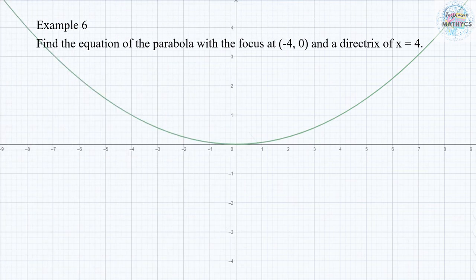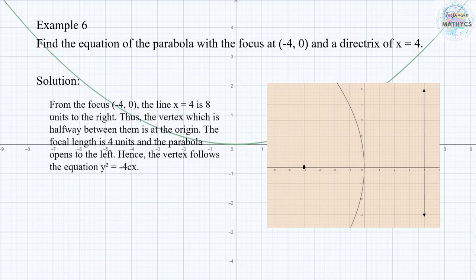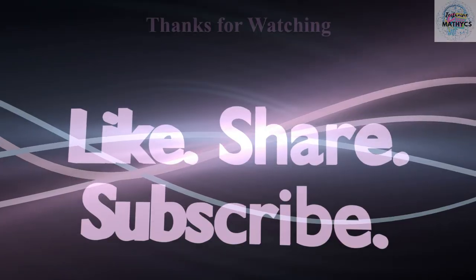Number 6: find the equation of the parabola with the focus at (negative 4, 0) and the directrix of x equals 4. From the focus at (negative 4, 0), the line x equals 4 is 8 units to the right. Thus, the vertex, which is halfway between them, is at the origin. The focal length is 4 units and the parabola opens to the left. Hence, it follows the equation y squared equals negative 4Cx, giving us the equation y squared equals negative 16x.